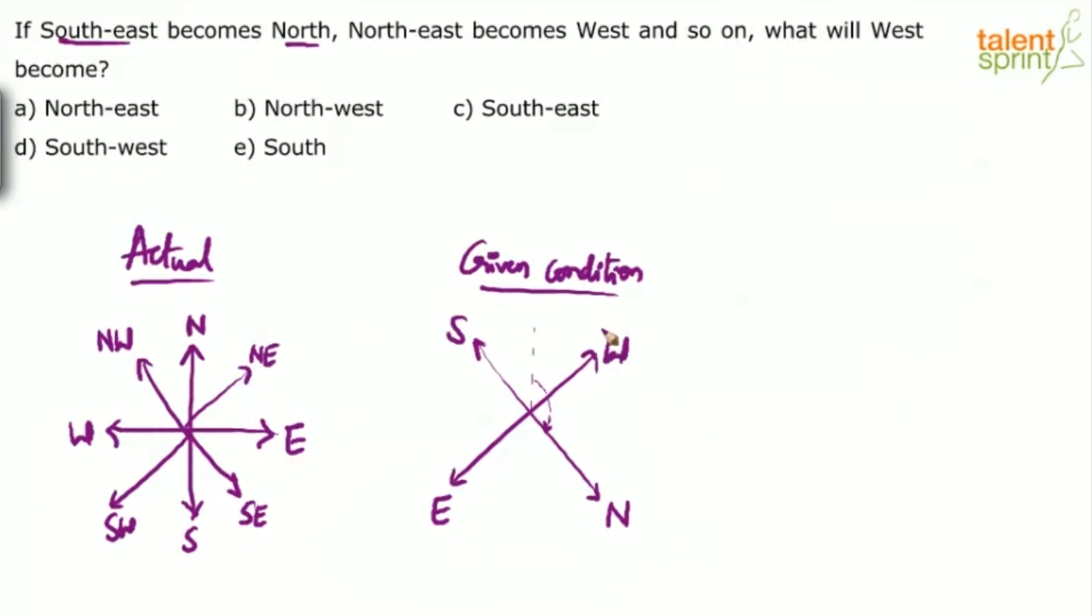Now the question here is, what will west become? What will west become? Understand, what is west actually? West actually is this. See, what will west become is not this west. This is the new west. This is the new north, new east, new south and new west. But what will west become? That means the original west. What is the original west? This is the original west. Yes or no? The original west is this direction. And it comes between what? South and east. Now you know that anything that comes between south and east is southeast. So what will west become? It will become southeast. So your answer should be option C.